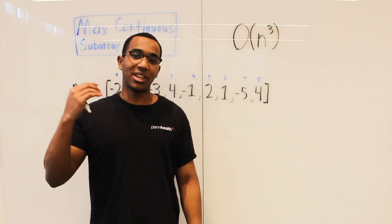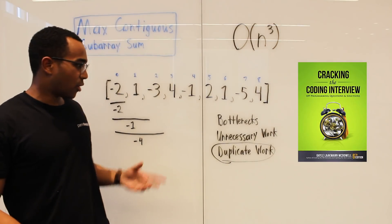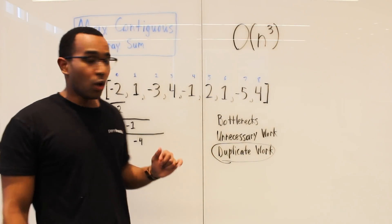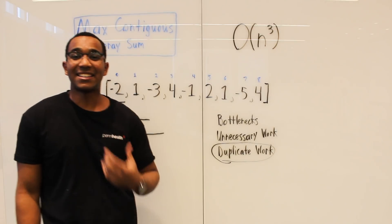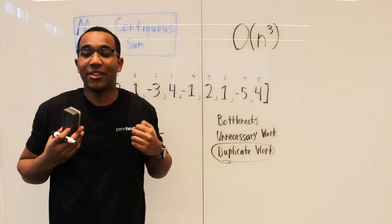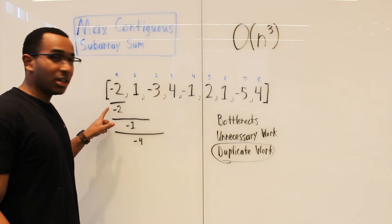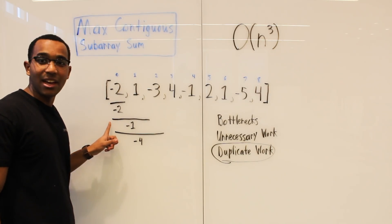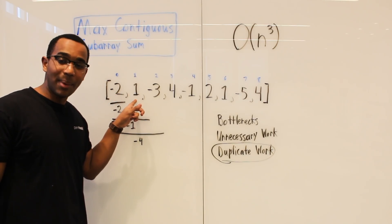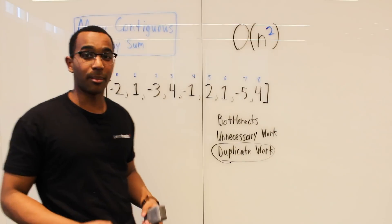Whenever we're trying to optimize an algorithm, we think of bottlenecks, unnecessary work, and duplicate work — BUD from Cracking the Coding Interview. We're duplicating work by finding a sum for every new subarray. But we already have information about a subarray's sum. If we know the subarray of just negative 2 has a sum of negative 2, why recompute the whole sum for the next window?